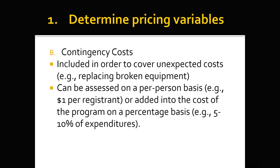You also have to consider contingency costs — like insurance that you pay yourself — included to cover unexpected costs. You have to include contingency costs as an organization, because otherwise you won't have the money if something goes wrong, like broken equipment or a roof that needs fixing. This can be based on a per-person basis, like a dollar per registrant, or added to the cost of the program on a percentage basis, or both.